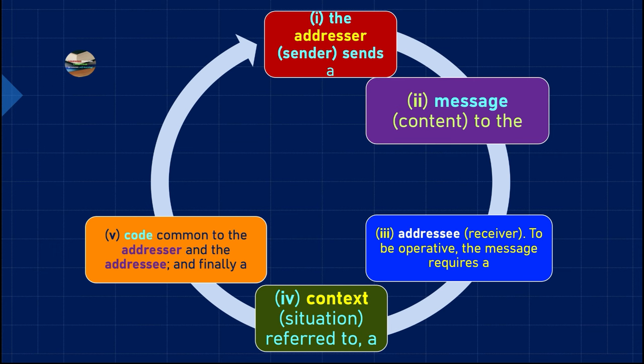For example, if I know English and speak to you but the other person does not know English, communication cannot take place — it is impossible. So we must have a common code between the addresser and the addressee through which we can exchange ideas.